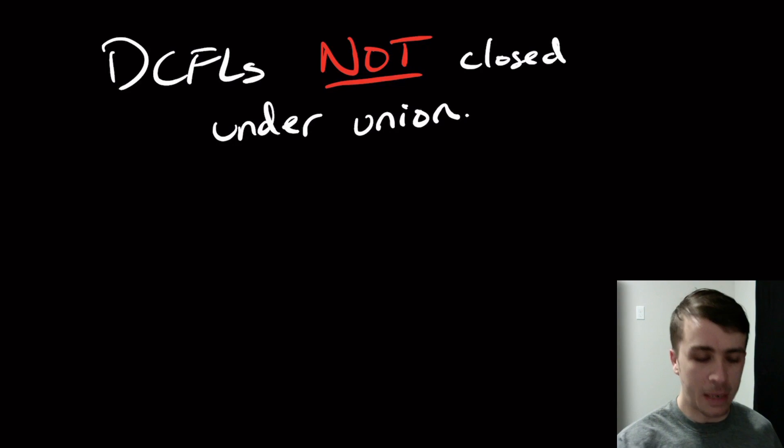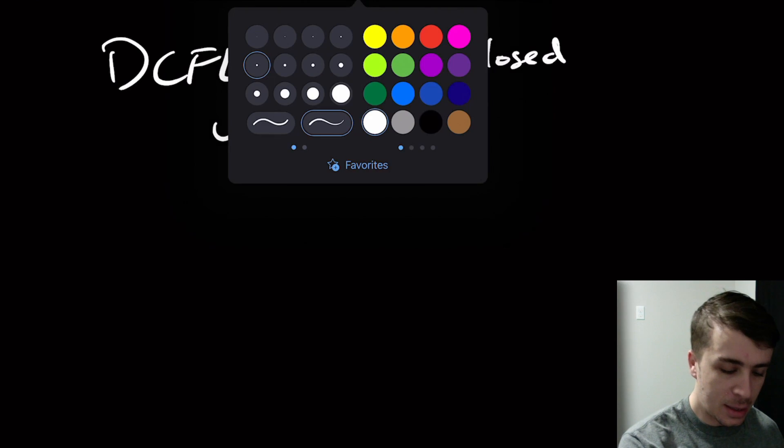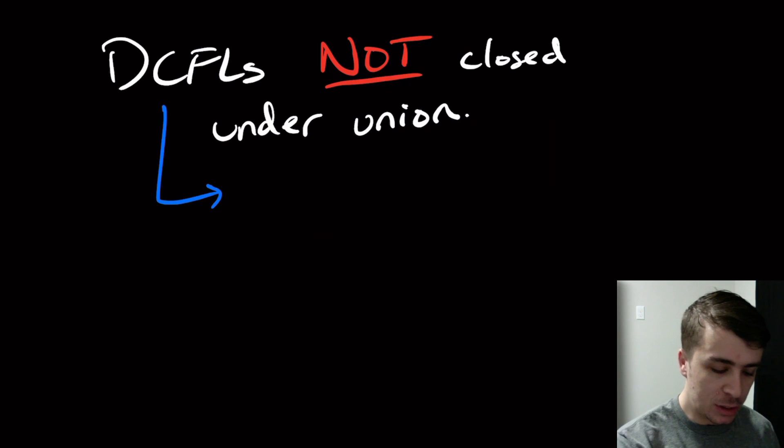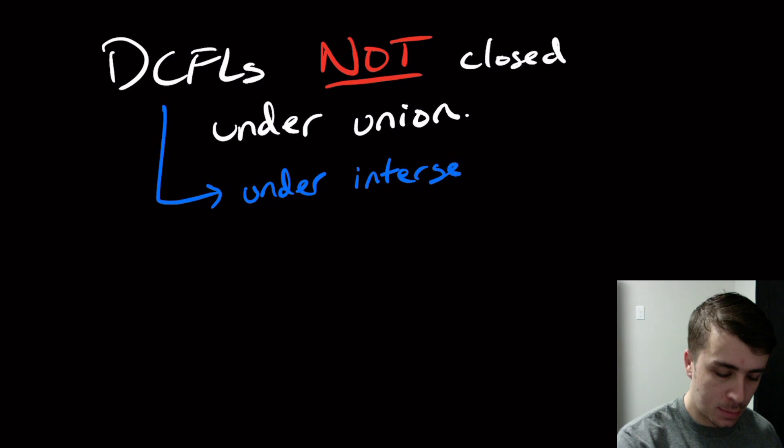Hi, welcome to another edition of Easy Theory. Today we're going to be proving that deterministic context-free languages are not closed under union. And we can actually show that we can get one more for free from this, which is that they're not closed under intersection either.